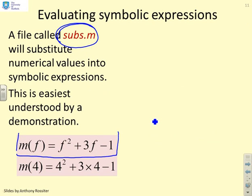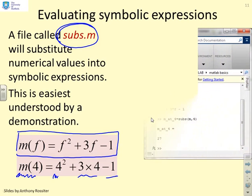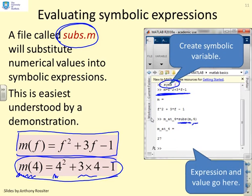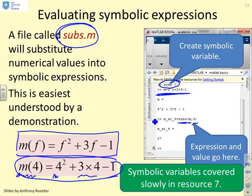Let's assume that I had an expression m, which was f squared plus 3f minus 1. In maths terminology, if I wrote m brackets 4, that would be interpreted as 4 squared plus 3 times 4 minus 1, because m of 4 is a function. If you wanted to do this in MATLAB, it's very similar. I've defined f to be symbolic. I define my function m equals f squared plus 3f minus 1. And then this command, where I substitute in the value 4, you use subs. So you say substitute into the function m the value 4, and it will work it out for you. Here you see we get the value 27. Symbolic variables are covered much more in resource 7.